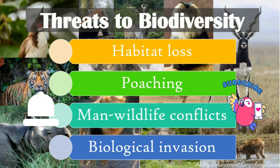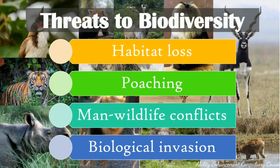The main threat to biodiversity comes from the loss of habitat. We humans use up the habitats or forest land for various purposes like agriculture, industrialization, or building settlements for urbanization. In some cases there is fragmentation of the habitat, so there is loss of the habitat in installments, leading to scattered patches of forest which altogether is a huge threat for biodiversity.